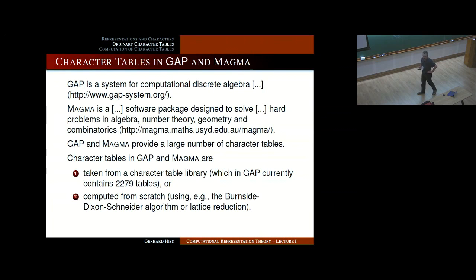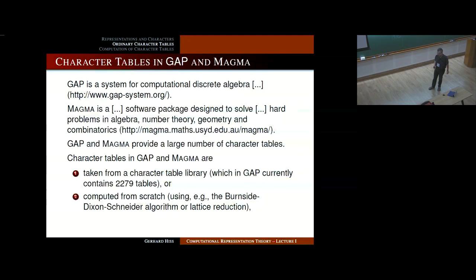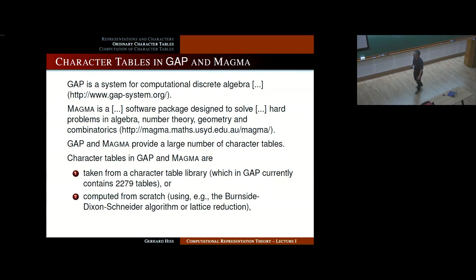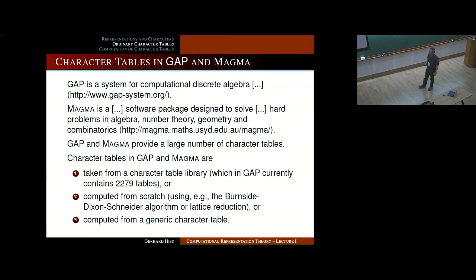How does one compute character tables? You can compute them from scratch — the group has to be given to you in some way. For many groups you can compute the character table from scratch using the Burnside-Dixon-Schneider algorithm or lattice reduction methods, which go back to Bill Unger and which are used in Magma. Or you can compute them from a generic character table, which I will explain later. There are also many other more ad hoc ways.